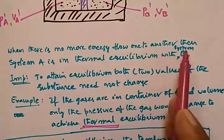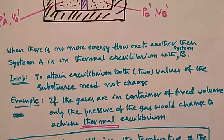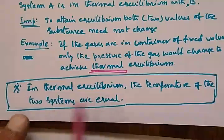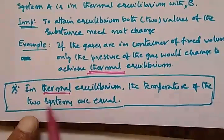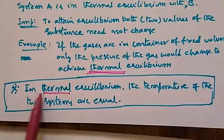When there is no more energy flowing from one system to another, system A is in thermal equilibrium with system B. The key point is: in thermal equilibrium, we are interested in the equality of temperature. Any other parameter like volume or pressure can change, but finally, in thermal equilibrium, the temperatures of the two systems are equal. That is the most important thing to remember.